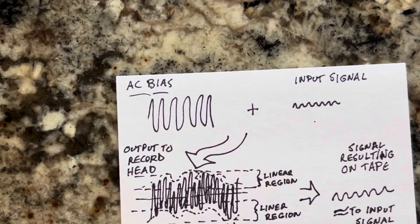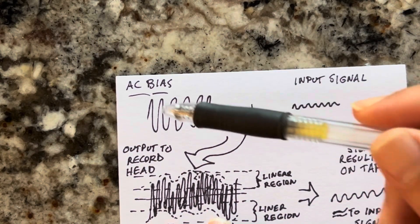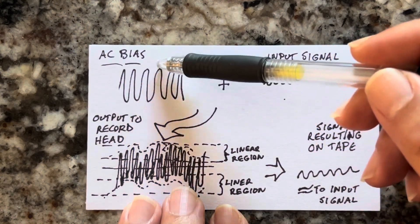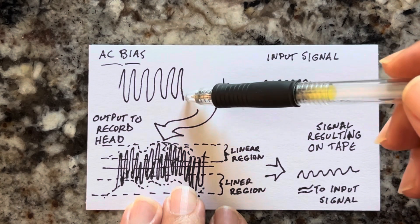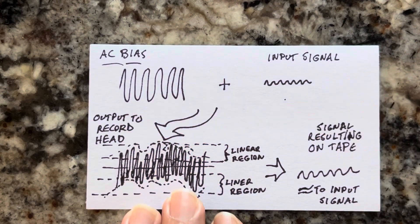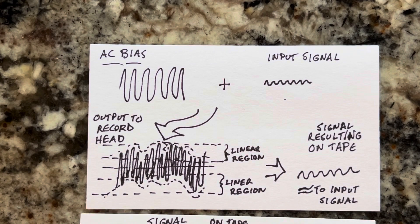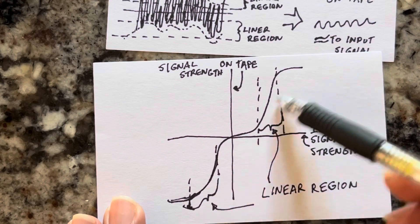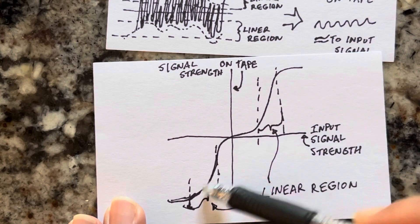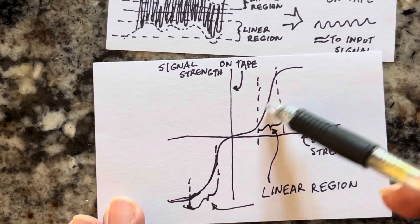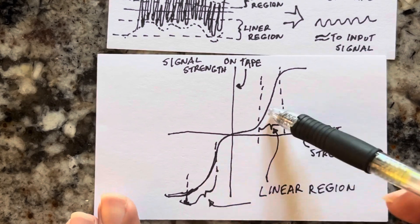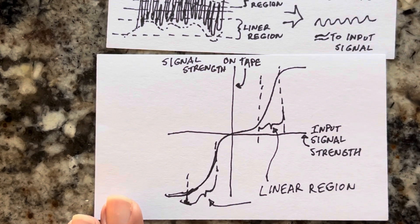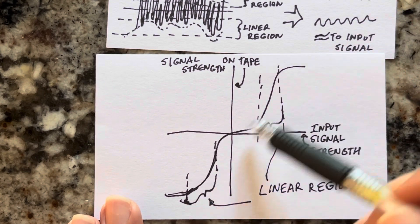What we do is take a high amplitude, high frequency signal that's inaudible. What that does is it basically switches from one side to the other over and over again at a very high frequency — higher than anything that's audible or anything coming through on the input signal. And what that does is it brings it into the linear region repeatedly.